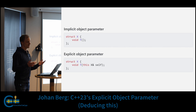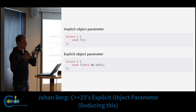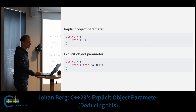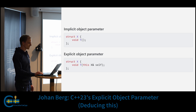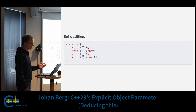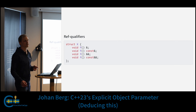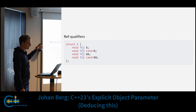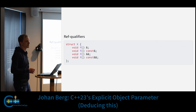We can also overload the function f based on that. So we can have one overload for when the object we call f on is an lvalue and another overload for when the object is an rvalue, and so on. That's not something new — it was introduced in C++11 by a feature called ref qualifiers. This is valid C++11 code, and the references at the end of the function declaration apply to the implicit object parameter. The first overload will be called if the object is an lvalue, the second for const lvalues, then rvalues and const rvalues.